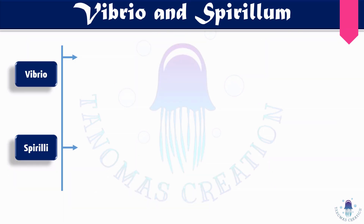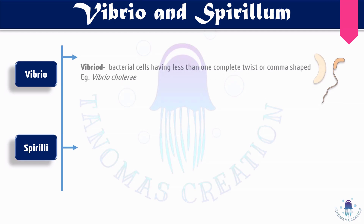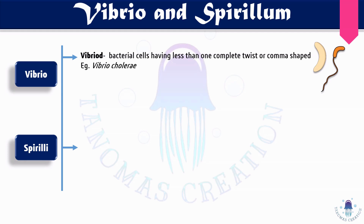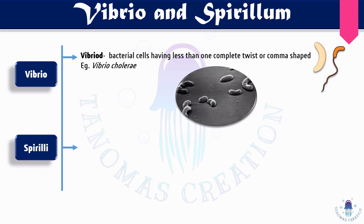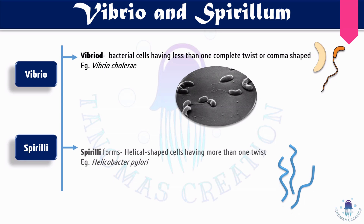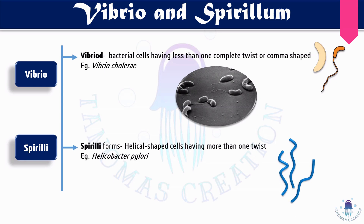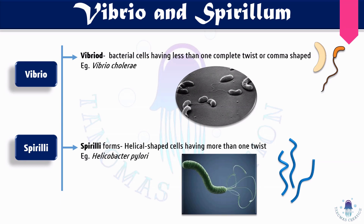The third bacterial shape is vibrio — bacterial cells with less than one complete twist, generally comma-shaped. The example is Vibrio cholerae, responsible for cholera disease, which appears comma-shaped. The fourth shape is spirale — helical-shaped bacteria with more than one twist that look filamentous. An example is Helicobacter pylori.